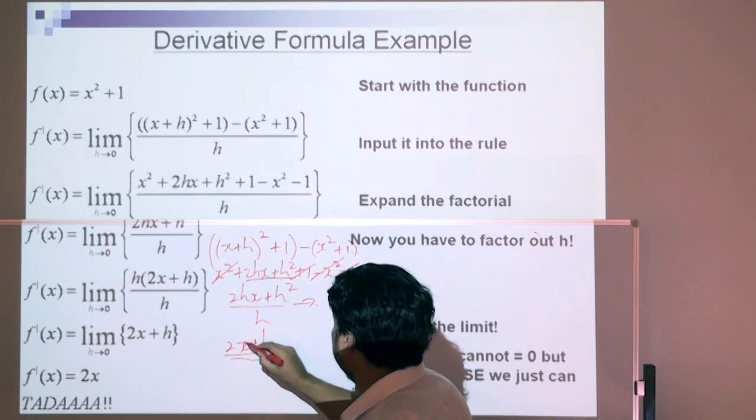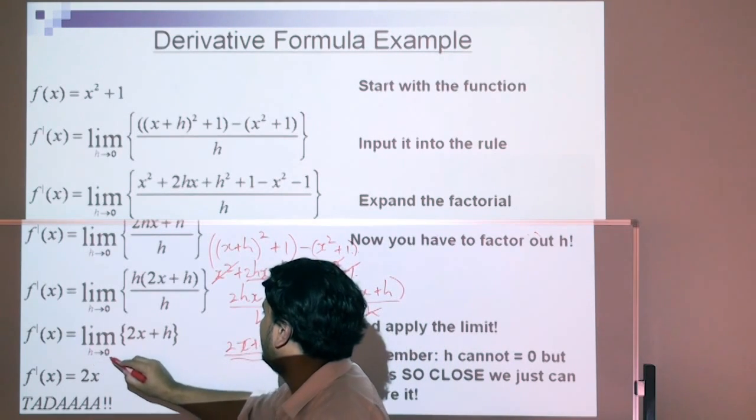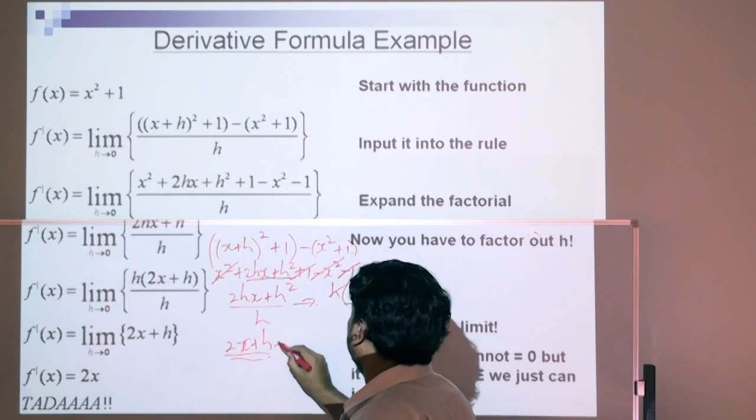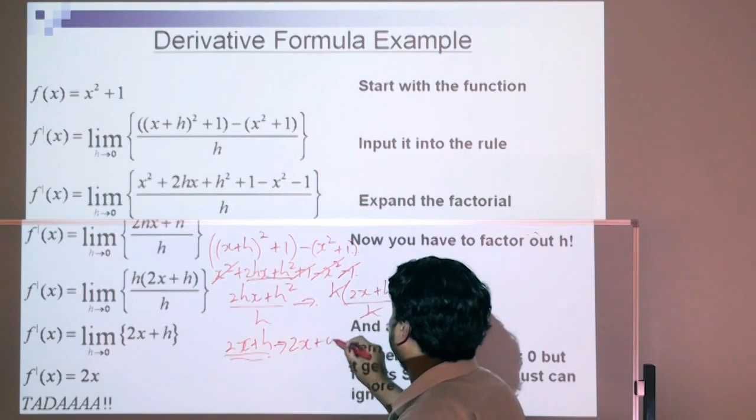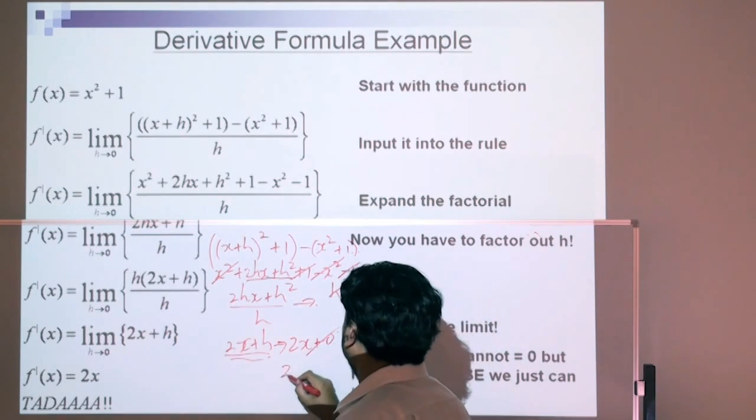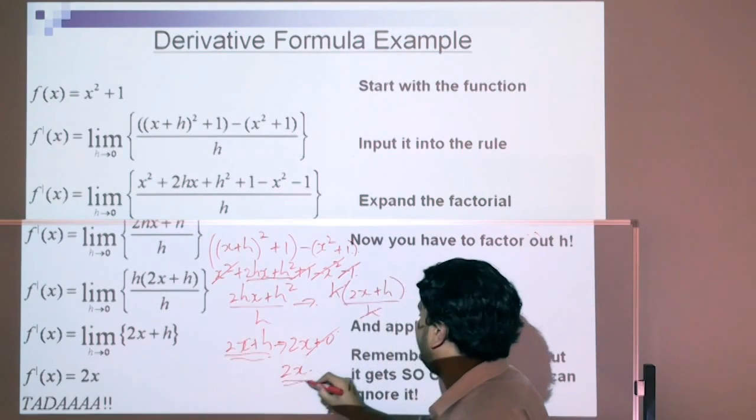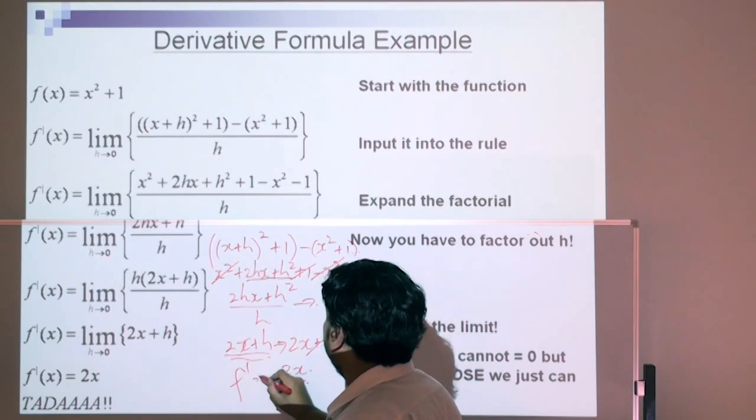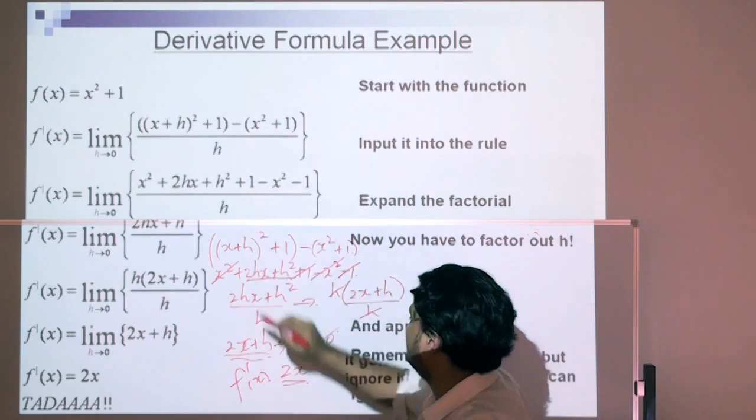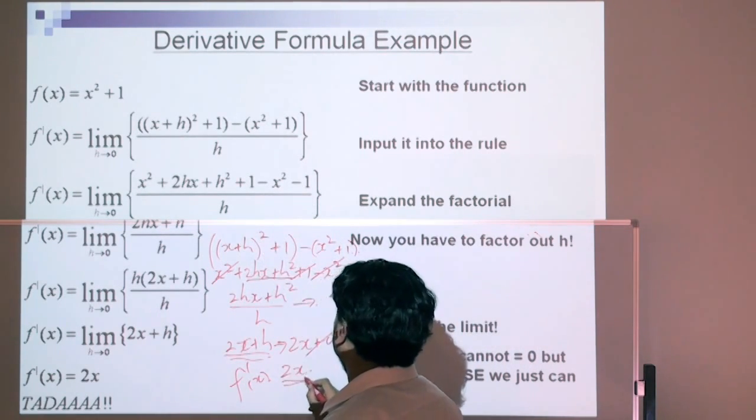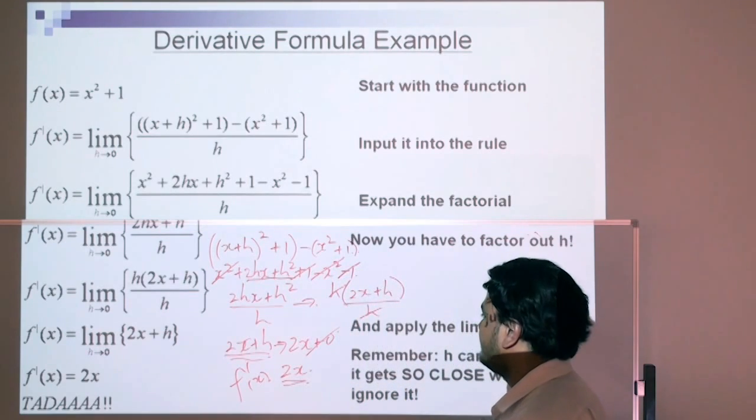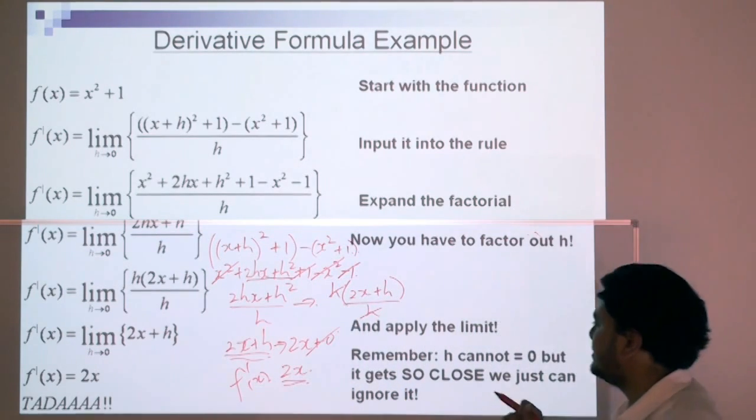Remember, we need to find a way to cancel the h in the numerator and the h in the denominator. That can become h times 2x plus h over h, cancel the h's, then we get 2x plus h. When we're up to this part, we can simply substitute the 0 into here, which becomes 2x plus 0, so we get 2x. Therefore, the derivative of that function there, x squared plus 1, is equal to 2x.